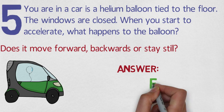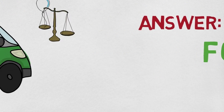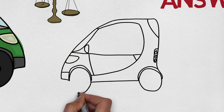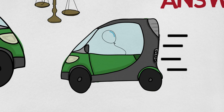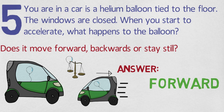The answer? Forward. Helium balloons float because helium is lighter than air. When you accelerate, the air is pushed backwards in the same way that your body is. This means the balloon will go forward. The opposite happens when you brake. The balloon will move backwards.